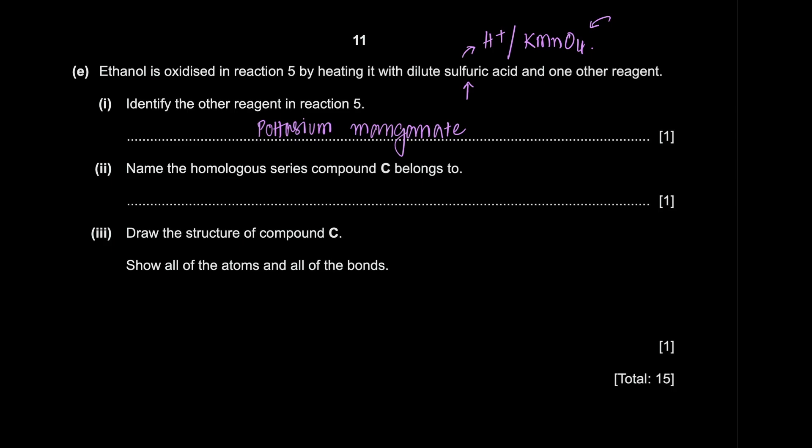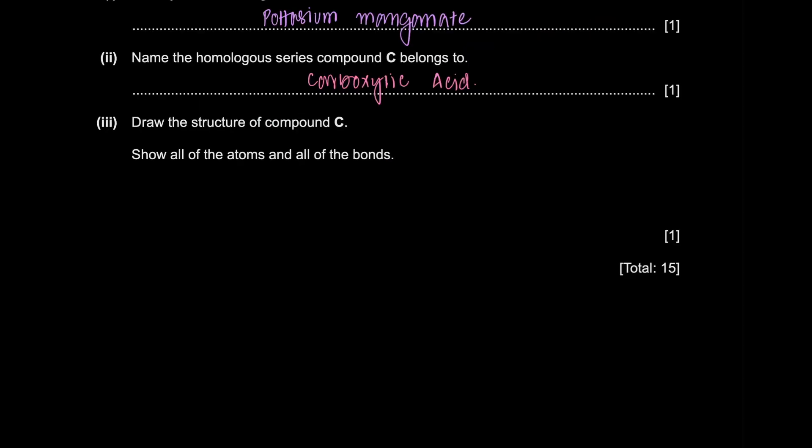In the homologous series, compound C belongs to. C is a carboxylic acid. Draw the structure of compound C. Show all the atoms and all the bonds. That is ethanoic acid with two carbons. One carbon has an oxygen with a double bond. Of course, ethanoic acid.